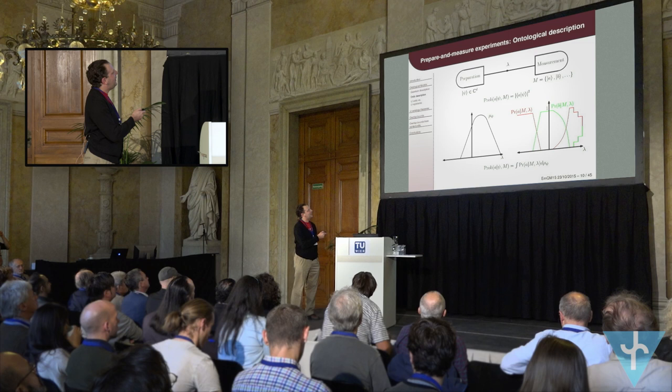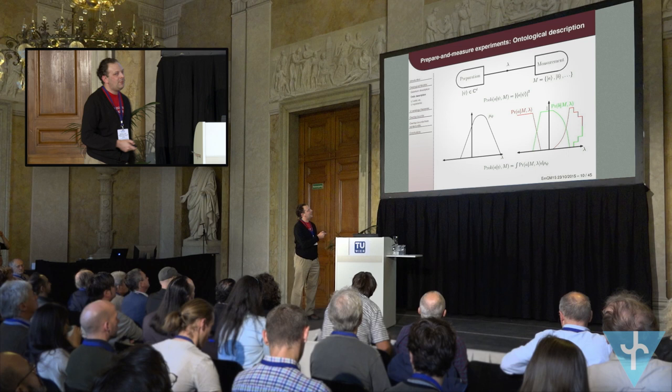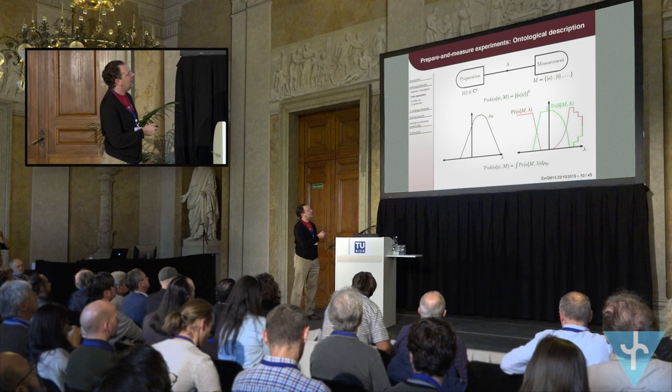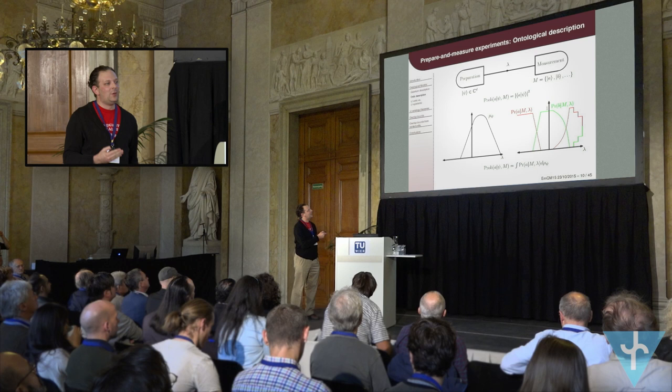When you make a preparation, that doesn't necessarily completely control the underlying state of reality. In general, when you prepare the system in state psi, you get some probability measure over the space of lambdas. We also don't want to assume determinism — there could still be some genuine stochasticity in nature. So for each value of lambda and each measurement, there has to be a probability distribution over the results, and these have to sum to one everywhere.